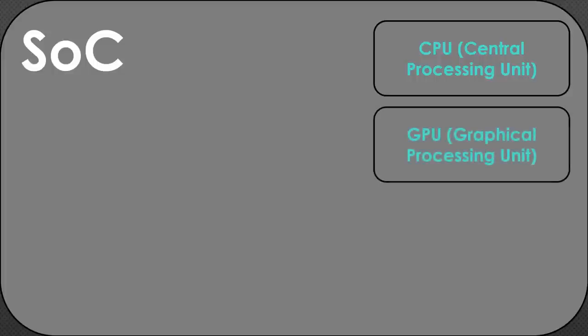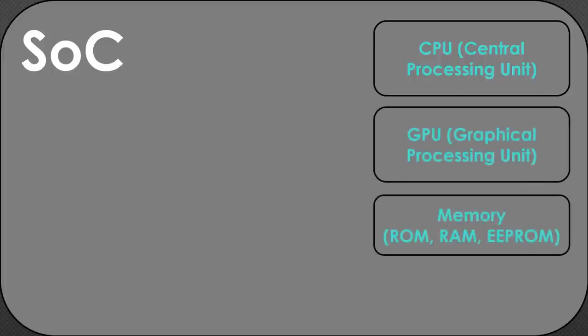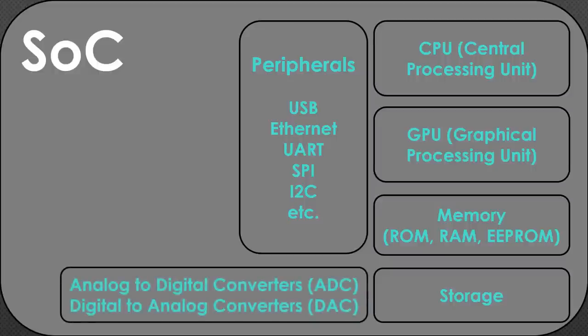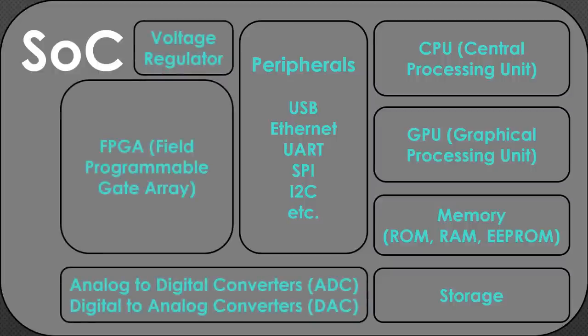The SOC can consist of one or more CPU cores, a graphical processing unit, memory including ROM, RAM, EEPROM or flash memory, storage, various peripherals such as USB, Ethernet, timers, SPI, I2C, UART, etc., analog-to-digital converters, digital-to-analog converters, voltage regulators, and even FPGAs.